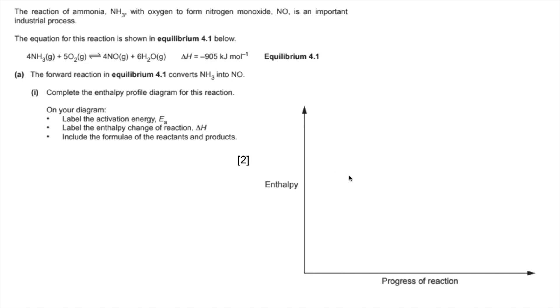Therefore the reactants' enthalpy will be higher than the products' enthalpy. The activation energy is an upwards arrow from the enthalpy of the reactants to the maximum of the curve. The enthalpy change is a downwards arrow from the reactants to the products, and we have to include the formulas of the reactants and products on the reactants line and the products line.